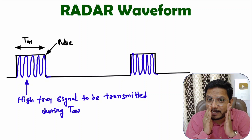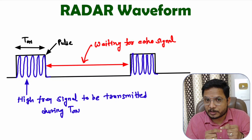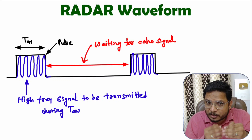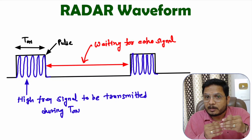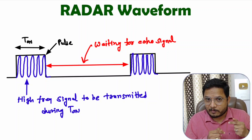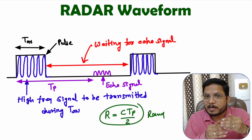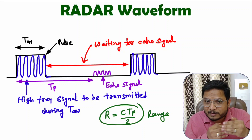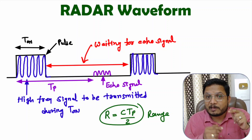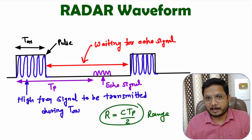After sending that pulse, it will be waiting for a short duration. During that short duration, it will be waiting for the echo signal. And based on the transmitted and received signal, that radar will be identifying the range of the target.